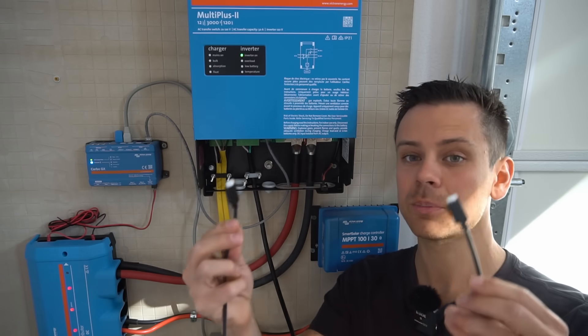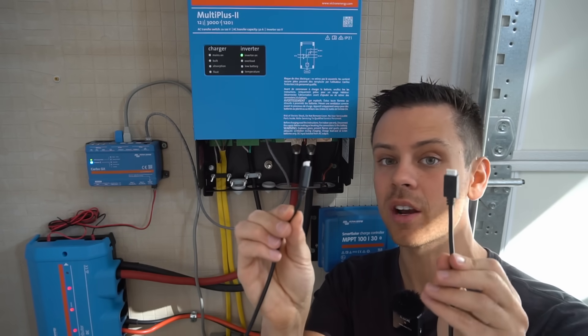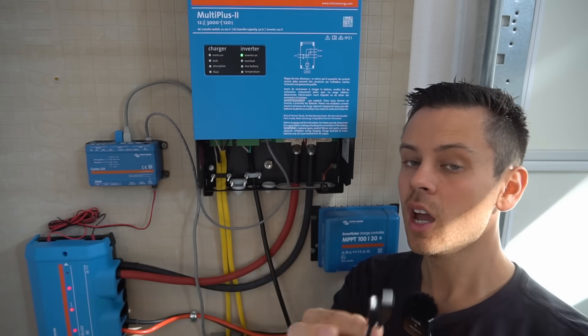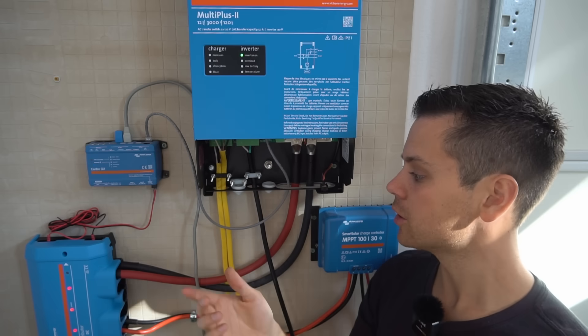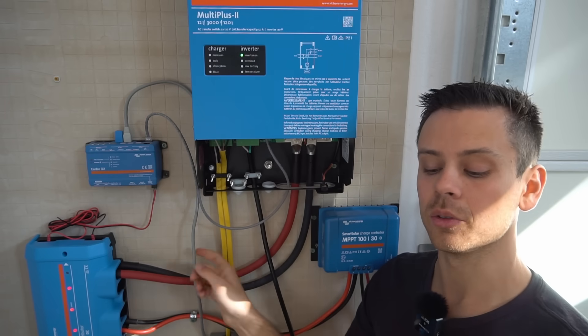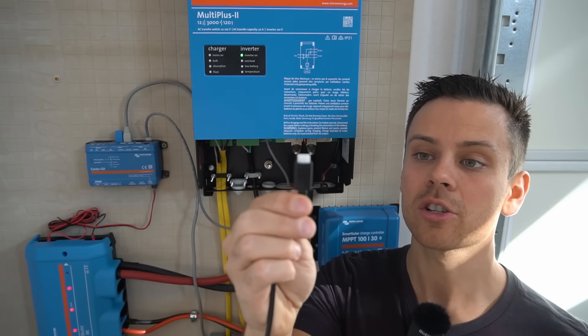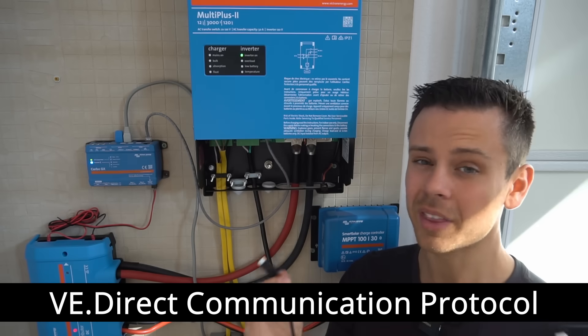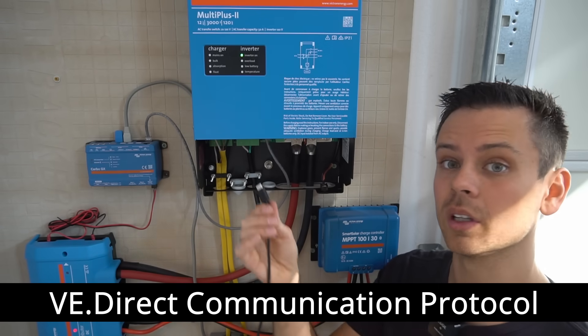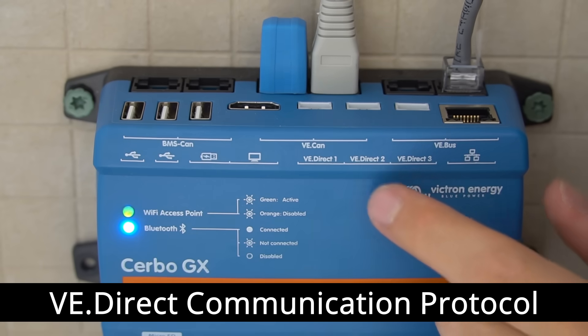Now let's move on to the solar charge controller because this one is a little different. And this requires a special type of cable that looks very different than all the other ones. The first two communication methods, we use standard ethernet cables, but this one uses a special cable made by Victron. But this one is very easy to use as well. You simply just plug it in.